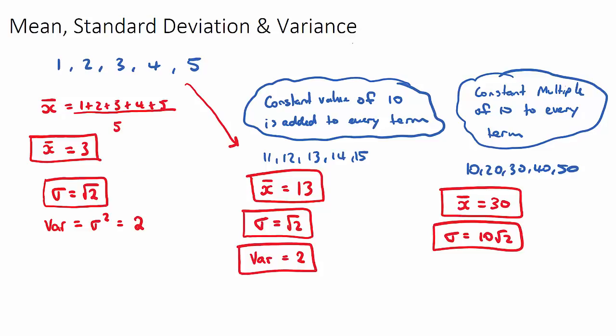And therefore, the new variance will be 10 root 2 squared. Now we have to square the 10, which is 100, and square the root 2, which is 2. So it will be 100 times 2, so 200 is the variance.